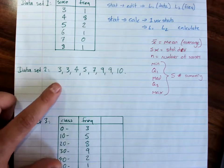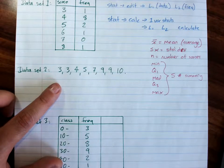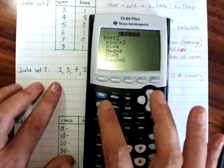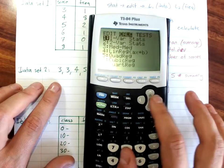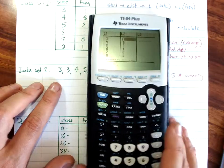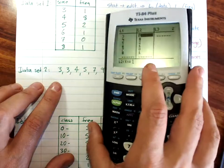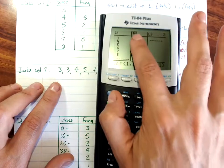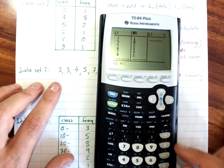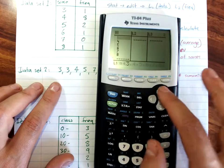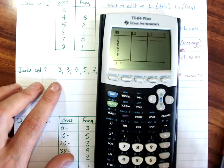Having a quick look at how we enter a data set when it's just one line of data, quit out of that, stat, and edit. Now to clear a whole column really fast, highlight the top of it, clear, and enter. Highlight the top, clear, enter.